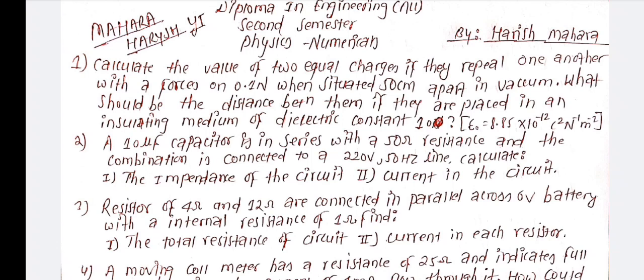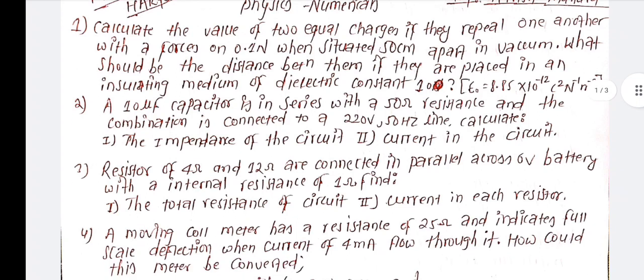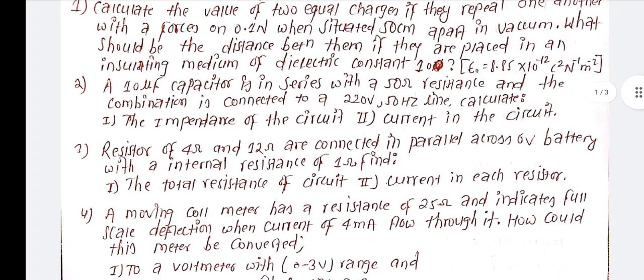A resistor of 4 ohm and 2 ohm are connected in parallel across a 6 volt battery with internal resistance of 1 ohm. Find the total resistance of the circuit and the current.